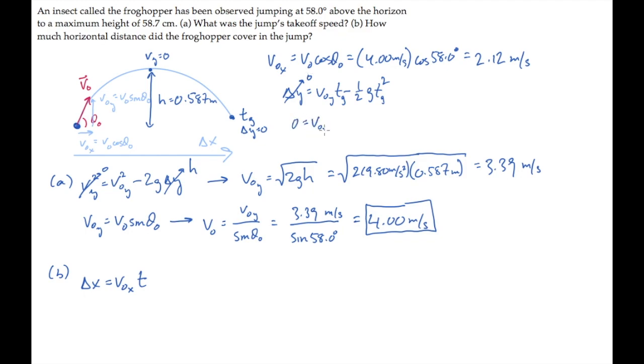We know that the time we're looking for is not equal to 0, so we can cancel one factor of it from this equation. Rewrite and solve for the time to reach the ground. And substitute numbers and calculate to find that the insect spends 0.692 seconds moving sideways.